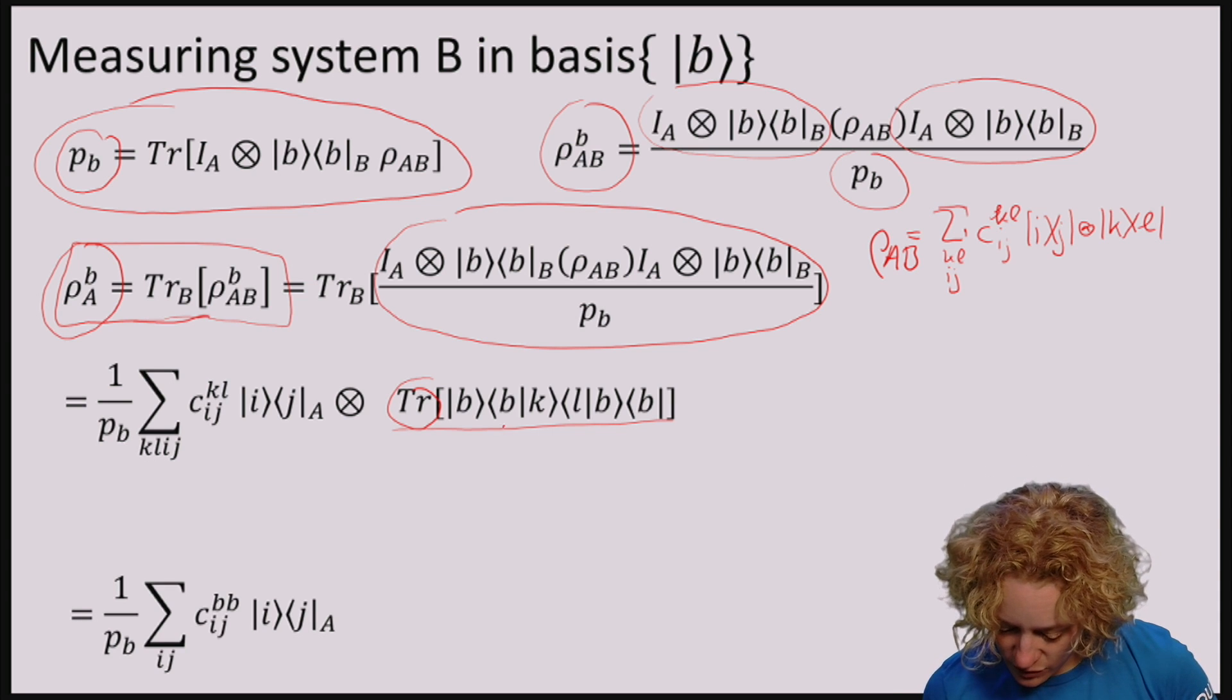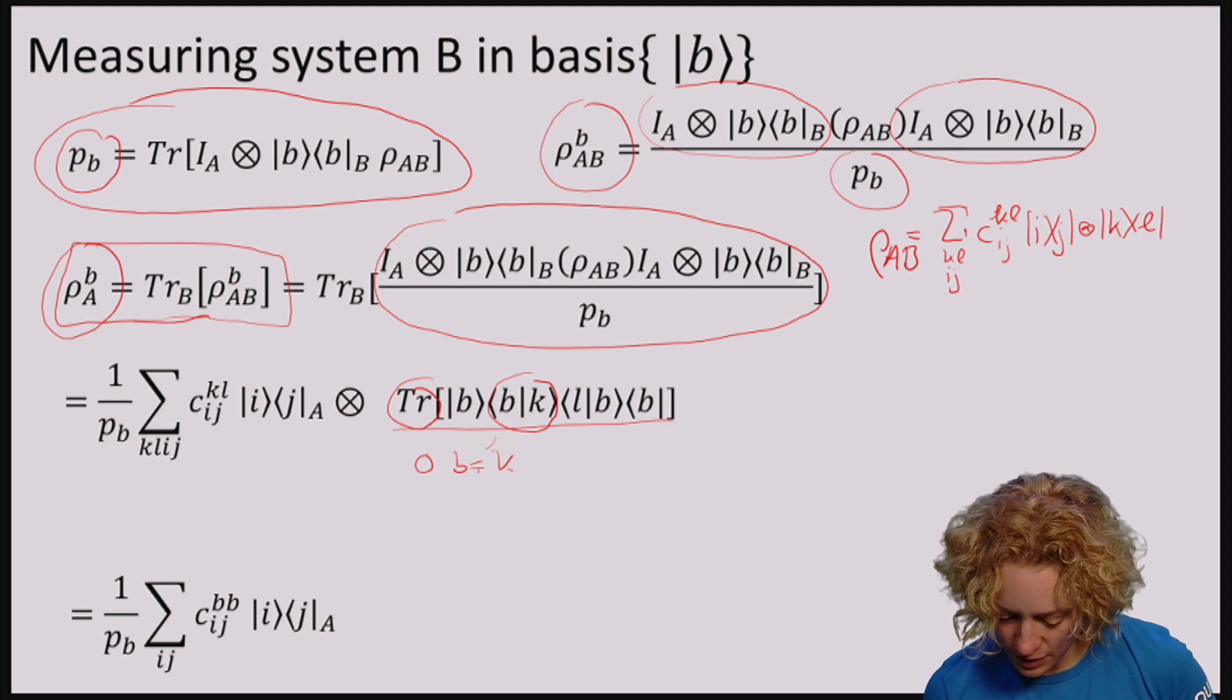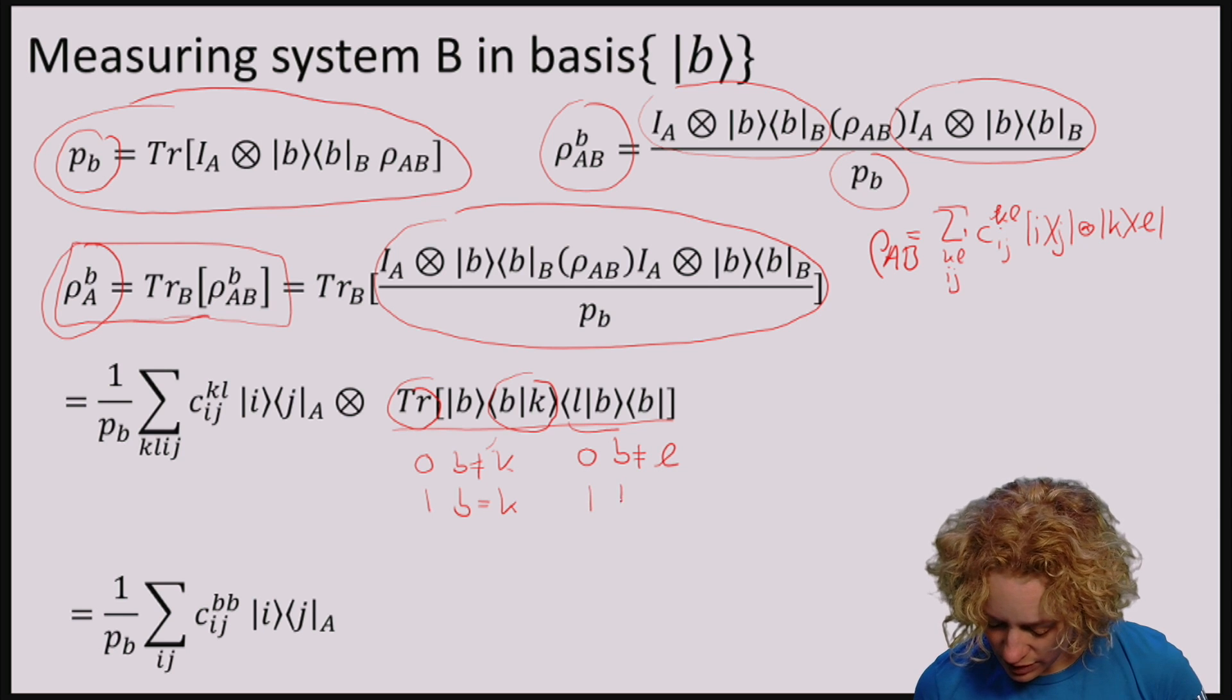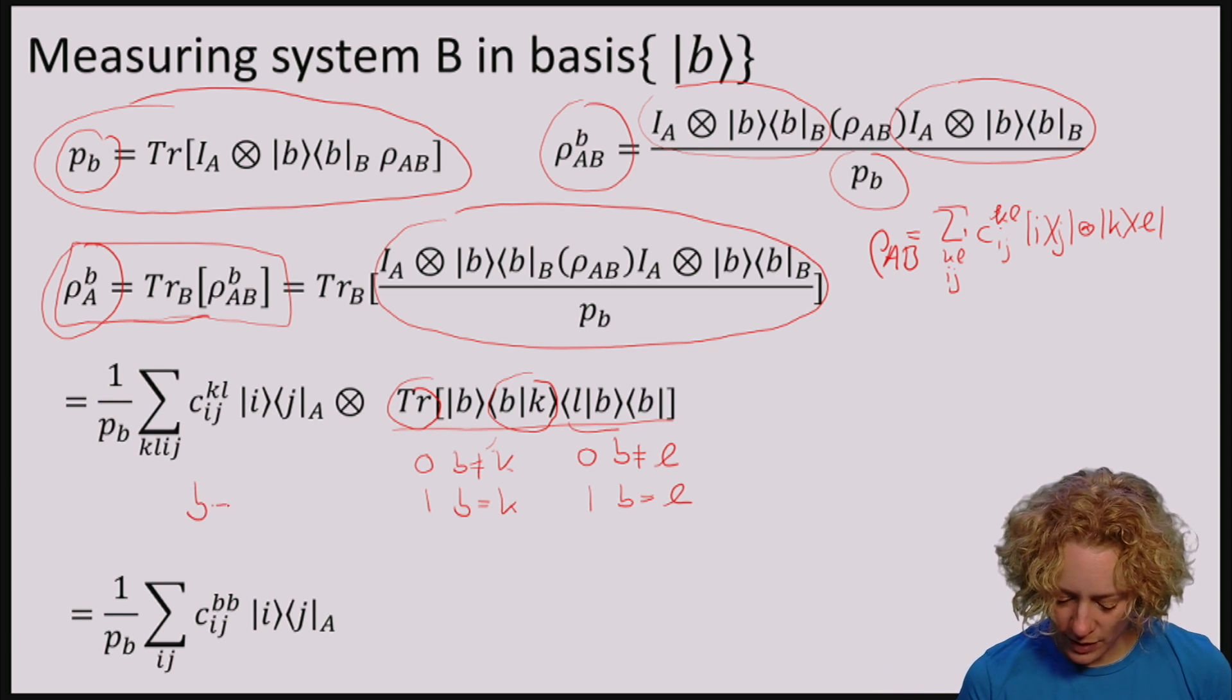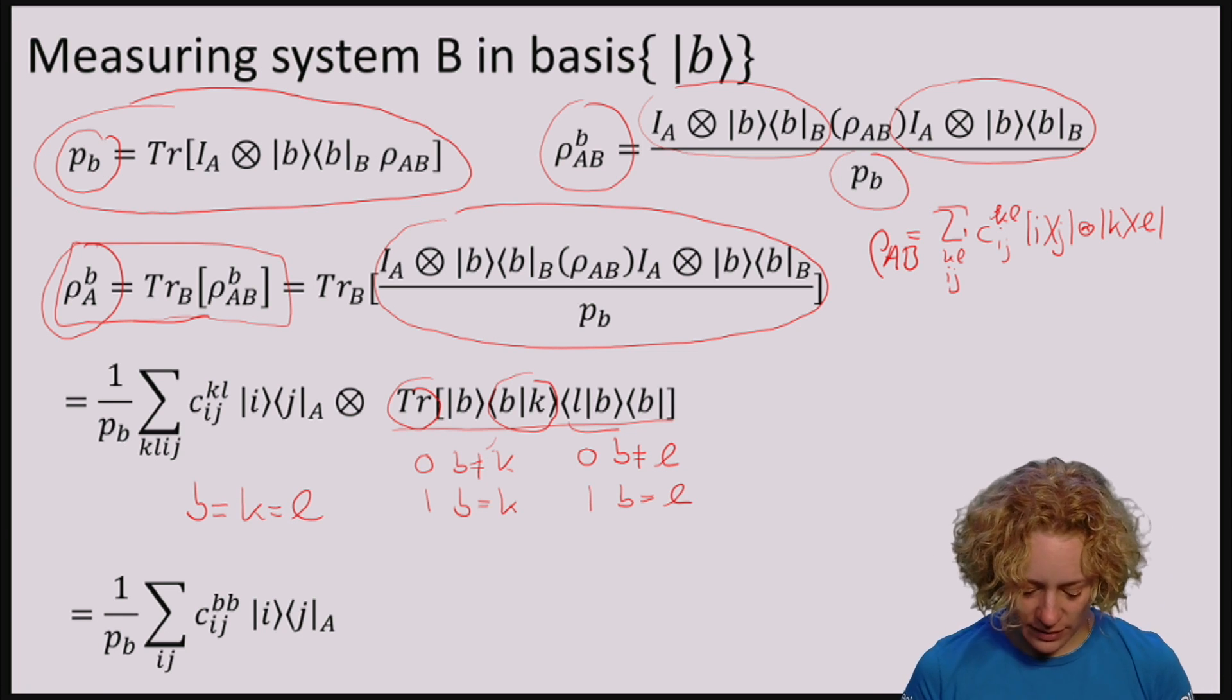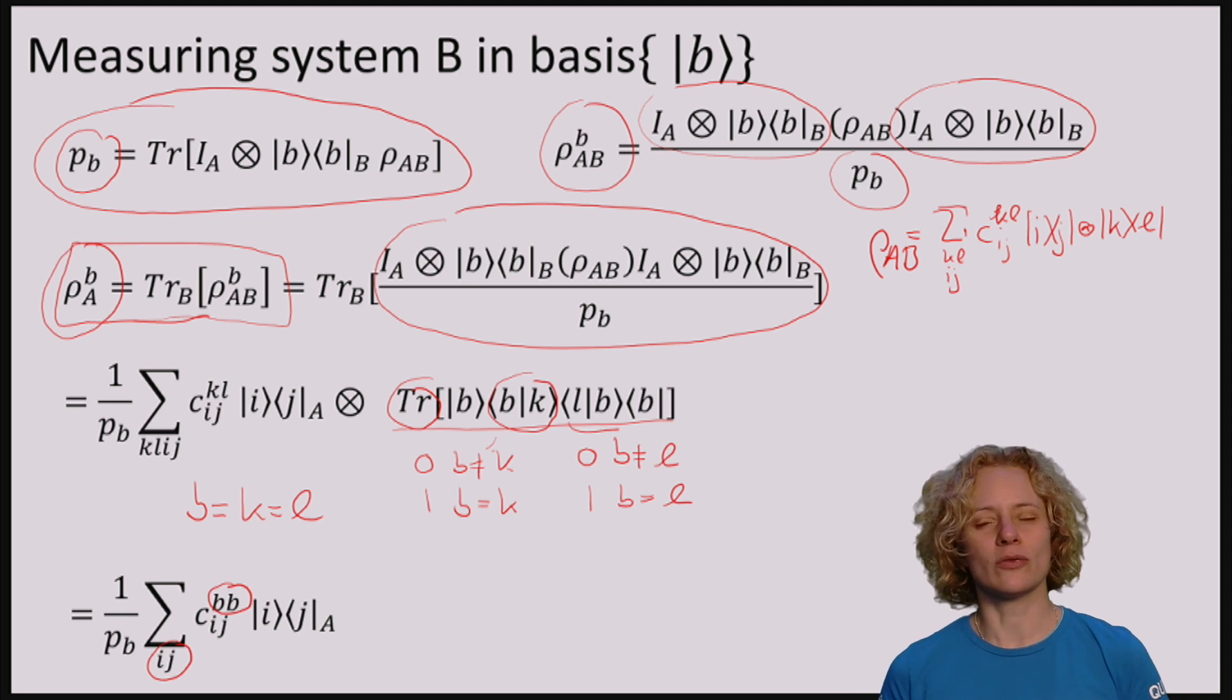So let me have a look at this. Looking at this term, we see that this is 0 if B is not equal to K, and 1 if B is equal to K. Similarly, this here is 0 if B is not equal to L, and 1 if B is equal to L. So this means that only the terms remain where B is equal to K is equal to L. So all the other coefficients go away, and I'm only summing over I and J, and I'm left with the terms that involve only B.